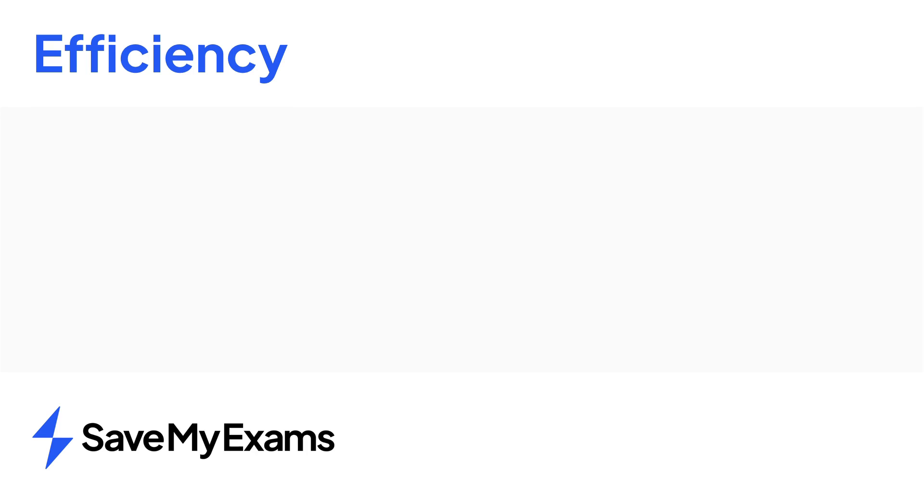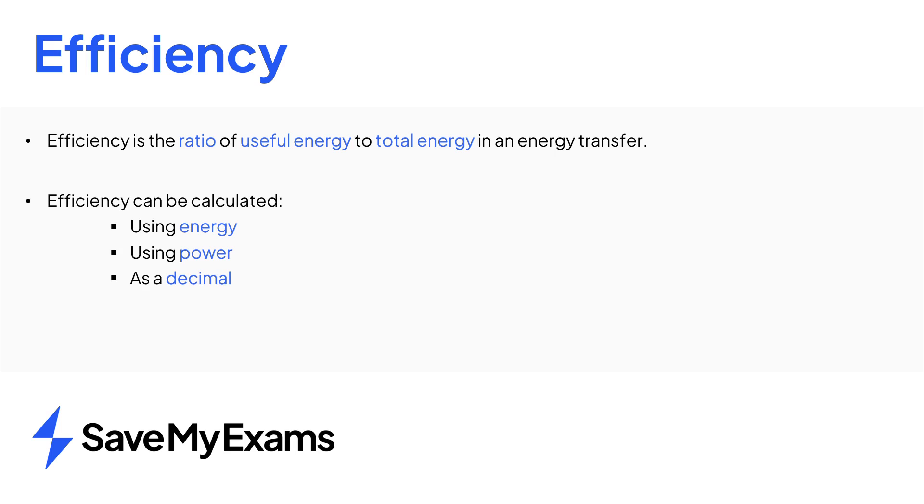In summary, efficiency is the ratio of the energy usefully transferred and the total energy. It's a way of monitoring wasted energy. Efficiency can be calculated using energy, using power, as a decimal or as a percentage. And remember that efficiency will usually form just a small part of a larger calculation. So make sure you look in previous question parts for any apparent missing values.